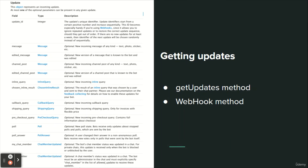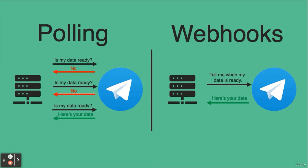There are two mutually exclusive ways of receiving updates for your bot: the getUpdates method on one hand, and webhooks on the other. Incoming updates are stored on the server until the bot receives them, but they will not be kept longer than 24 hours. Regardless of which option you choose, you will receive a JSON-serialized update object as a result. The structure of the update object is shown on the screen.